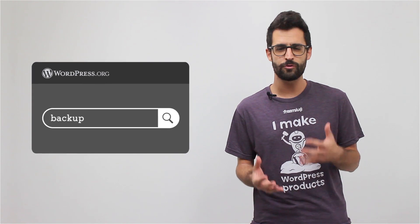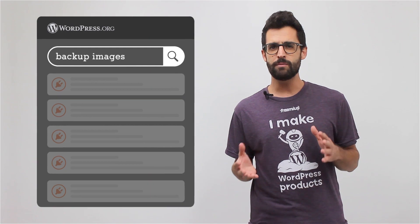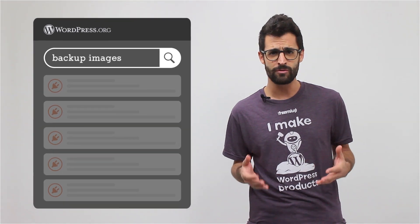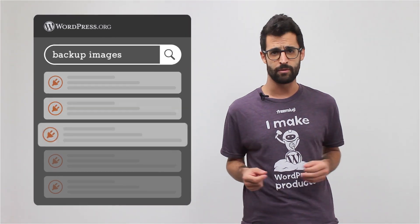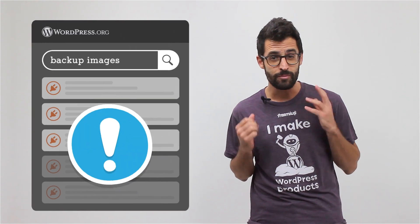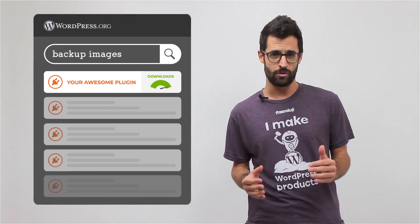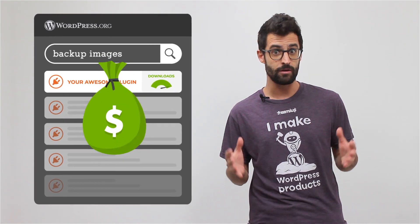First and foremost, why bother optimizing search rankings in the first place? And why focus on the WordPress.org repository search algorithm? The majority of users who download your product do it because they search for some kind of functionality that your product provides. Not many people really dig into the search results and most of them will probably choose one of the first products available. That is the reason SEO on the .org repo is so important. If your product comes up in the top results, you'll have significantly more downloads, which means more users and more paying customers.